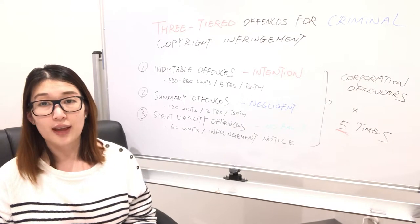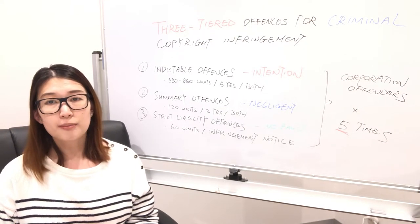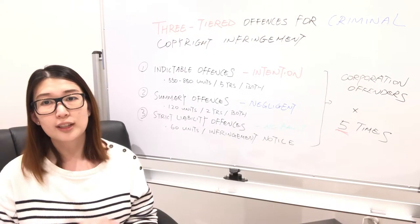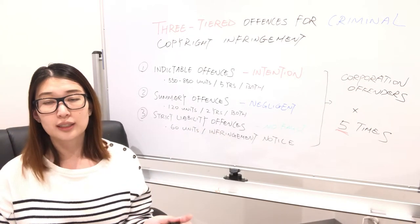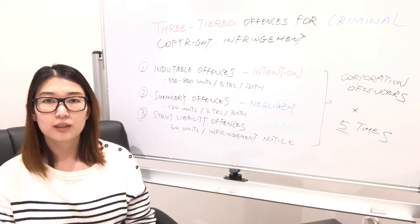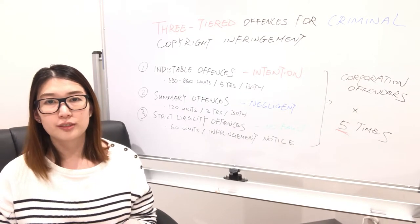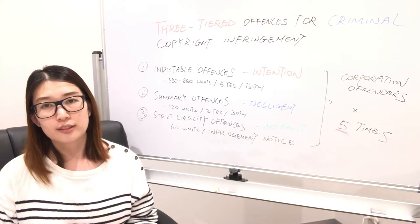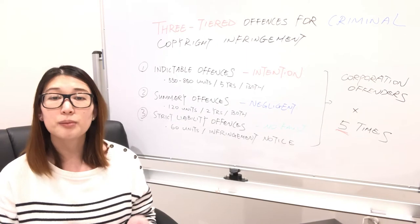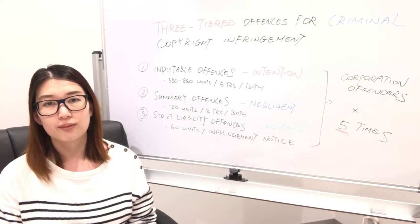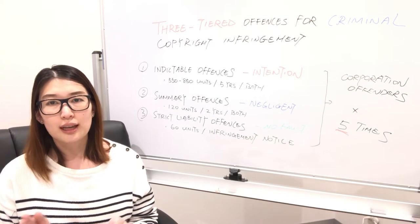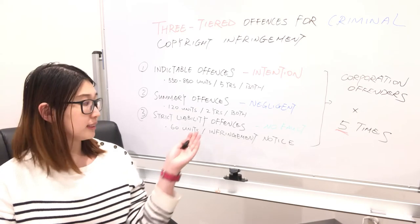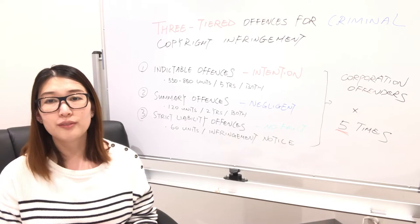Thirdly, for a strict liability offense. Unlike the other two offenses, the state of mind of the alleged offender is irrelevant in this case. There is no fault element to be established for this offense. For example, a person commits a strict liability offense by simply using an infringing copy to obtain commercial benefits. The aim of the strict liability offense provision is to make copyright easier to enforce in Australia. However, it is controversial that the provision may sometimes give prosecutors and police officers overly broad discretion when making their decisions. Nevertheless, individuals who commit a strict liability offense would face a maximum fine of 60 penalty units, or alternatively may be liable to receive an infringement notice requiring them to pay up to one-fifth of the maximum payable penalty.